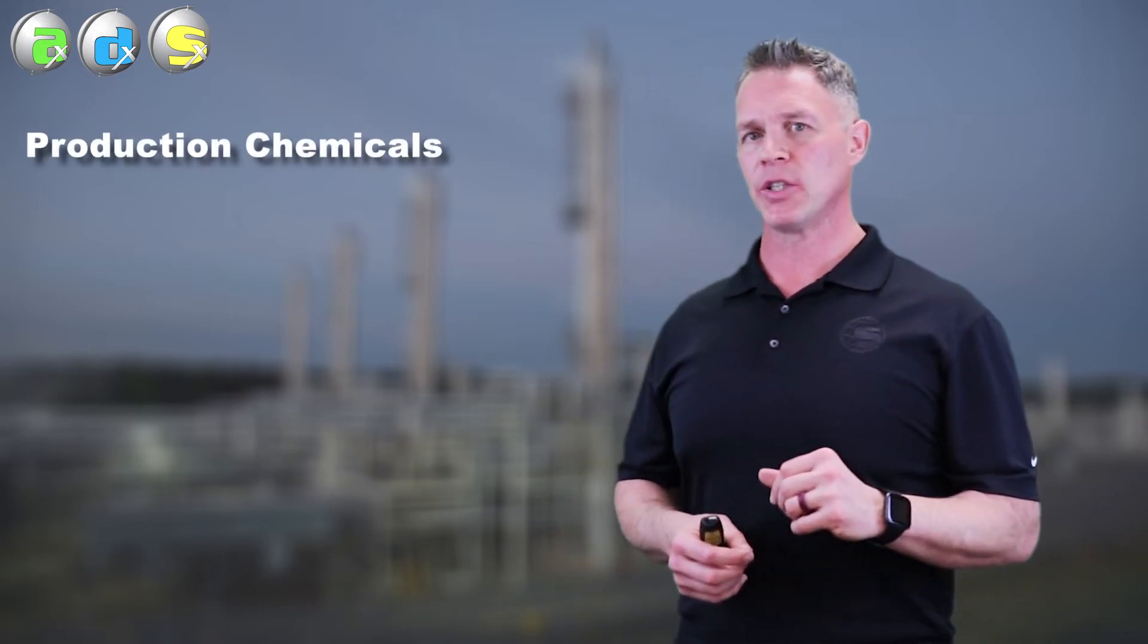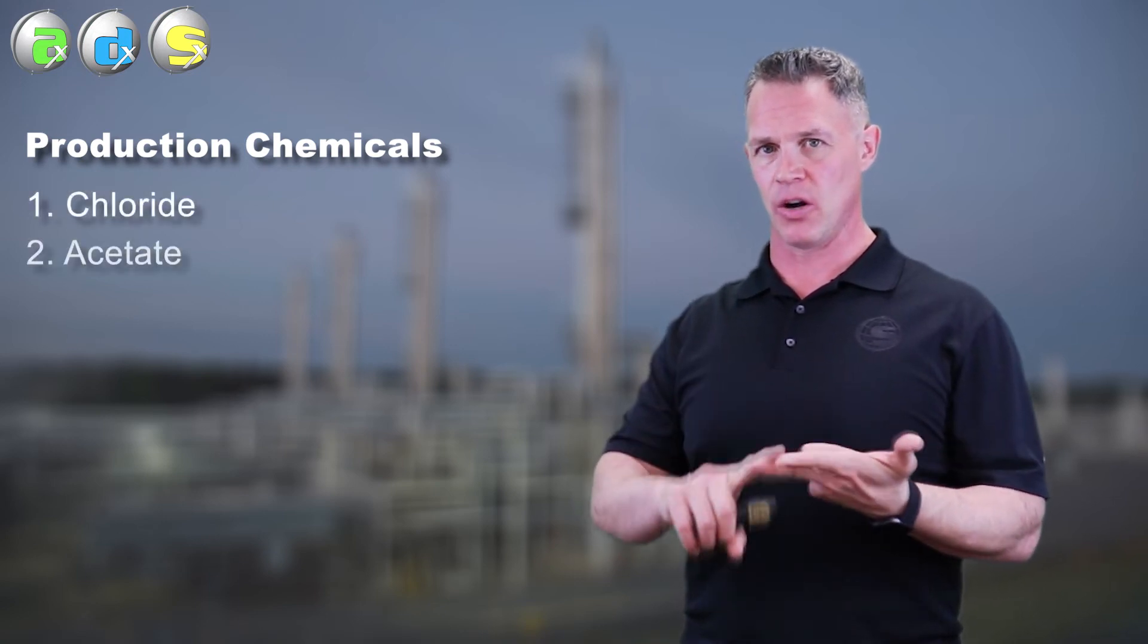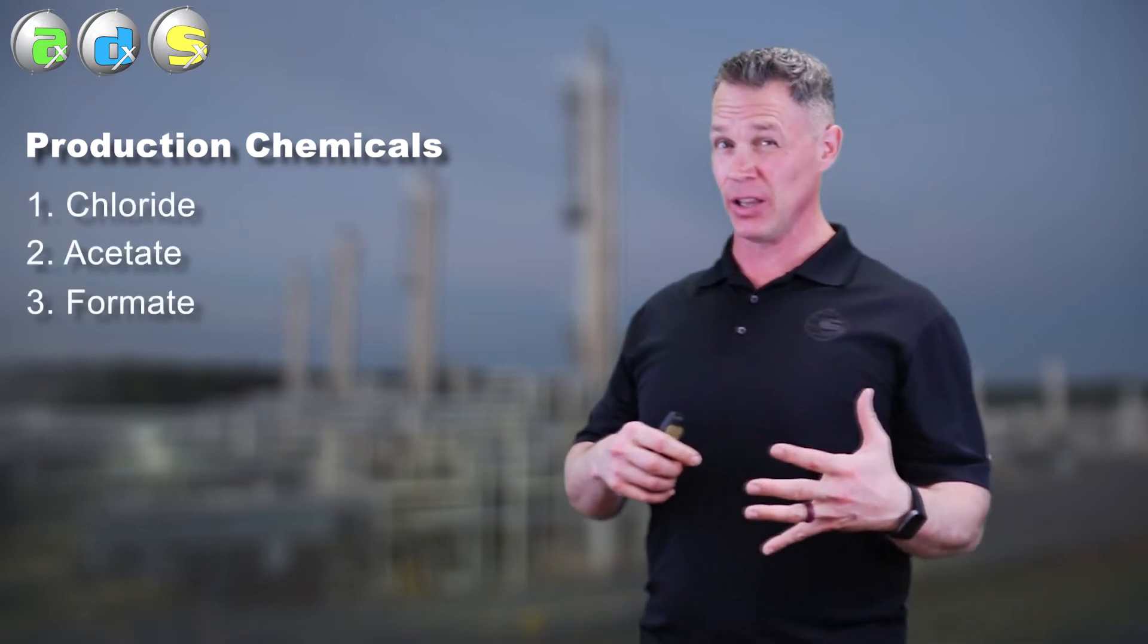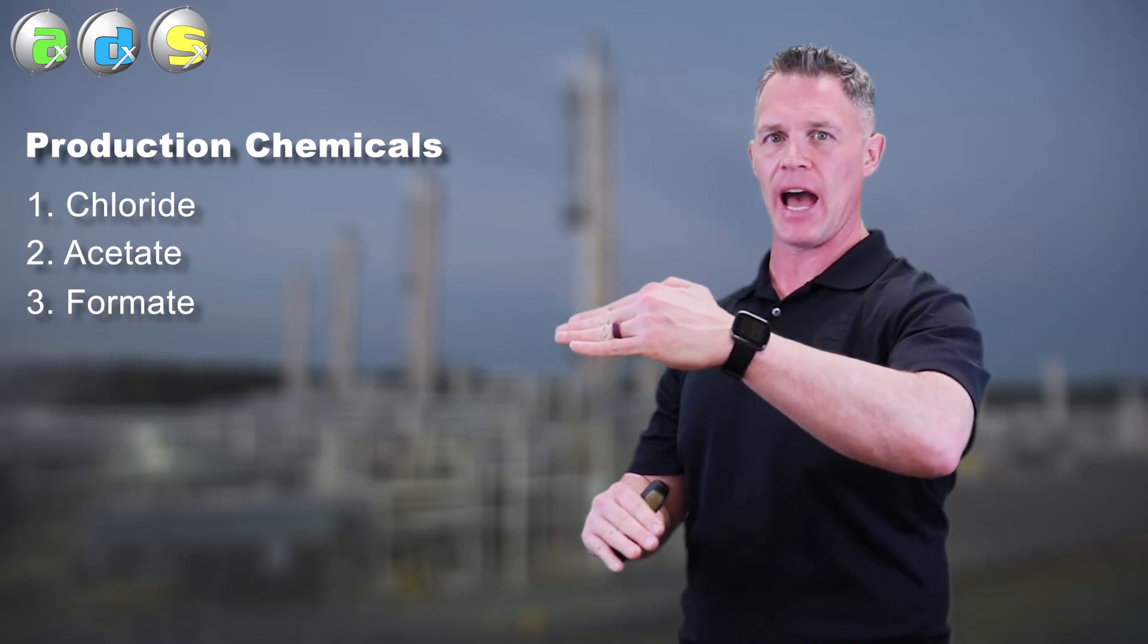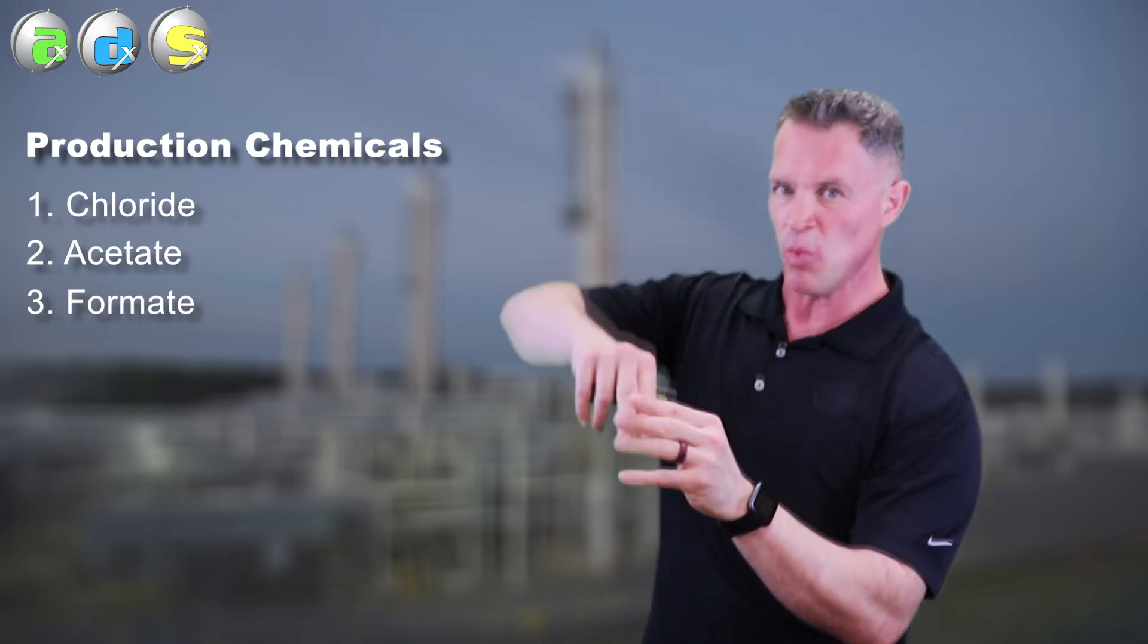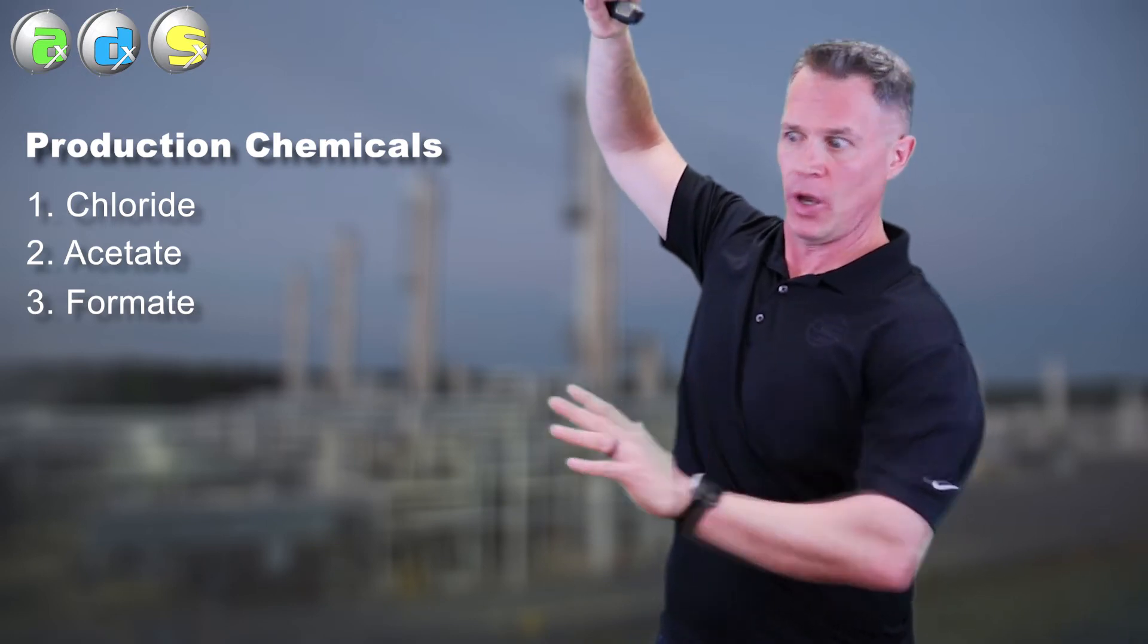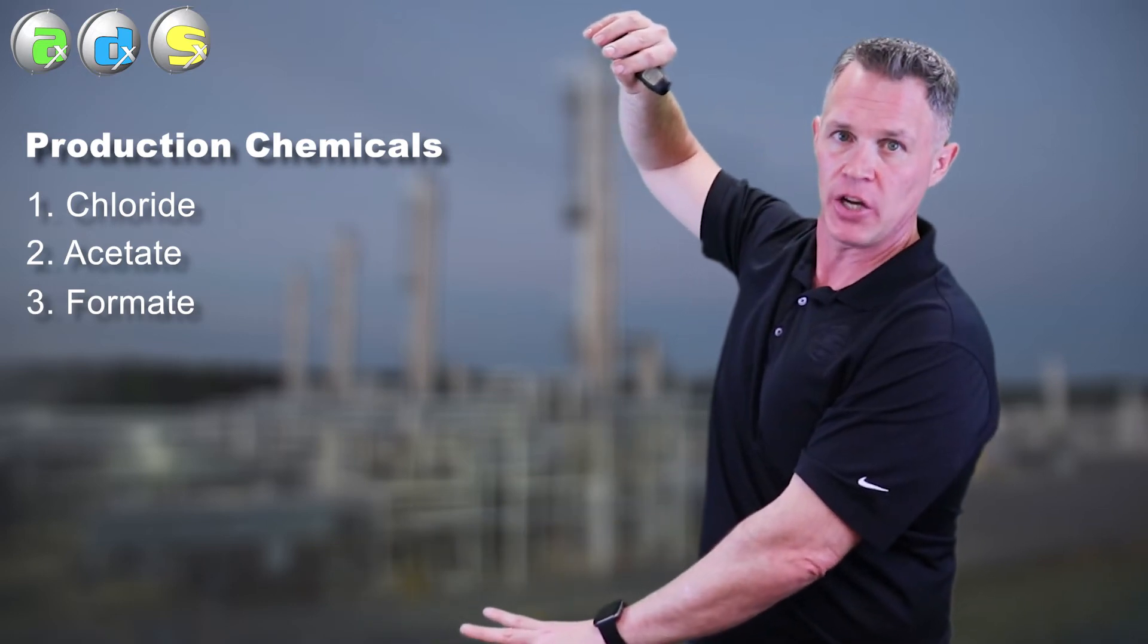Another contaminant which can cause heat stable amine salts are production chemicals or pipeline chemicals. The most common ones we see from this type of contamination would be chlorides, acetate, or formate. But what you're really looking for is in your list of acid anions that you got from the lab, if you're seeing a spike in only one anion, and all the rest stayed low or unchanged.